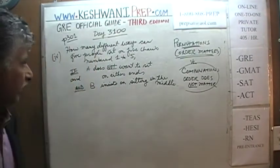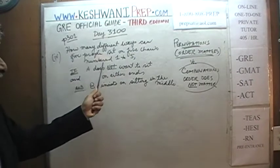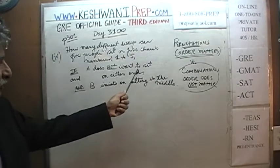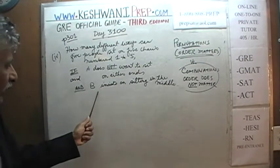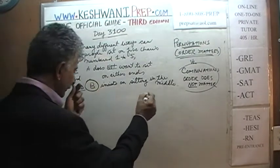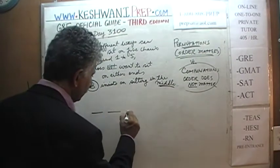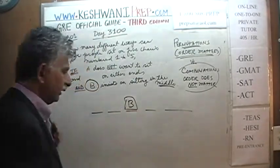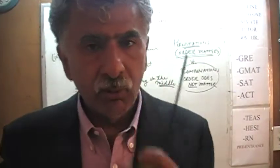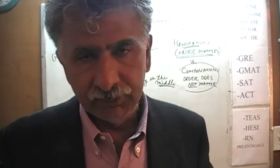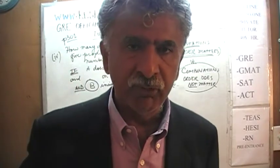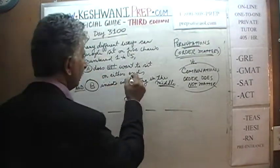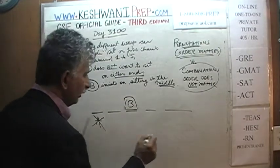The problem was: how many different ways can 5 people sit on 5 chairs numbered 1 through 5, if you have to satisfy two conditions? The first condition is that A does not want to sit on either end. The second condition is that B insists that he sits in the middle. B has to go in the middle — that's not a matter of choice. This is what is known as positive conditions. We always do the positive conditions first, then the negative conditions. A cannot go on either end.